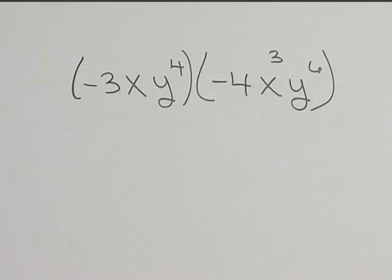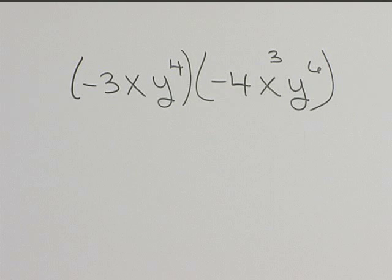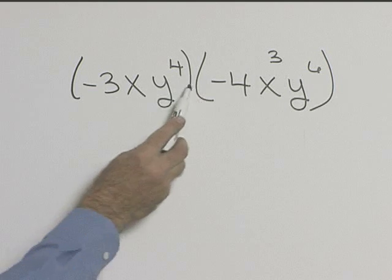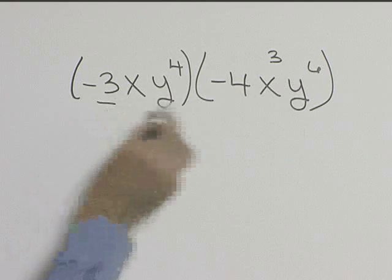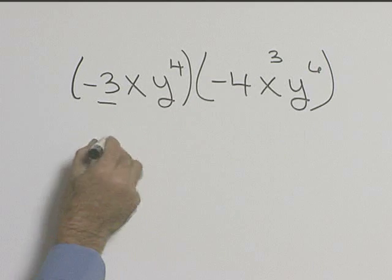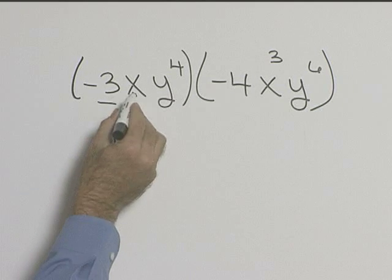Let's simplify the quantity negative 3xy to the fourth times the quantity negative 4x cubed y to the sixth. So we're multiplying our two quantities, so let's do our numbers. Negative 3 times negative 4 gives us positive 12.